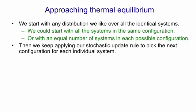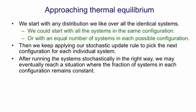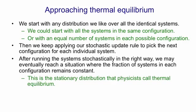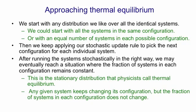We keep applying that stochastic rule, and after running the system stochastically in this way we may eventually reach a situation where the fraction of systems in each configuration remains constant. That will happen if we have symmetric connections — that's the stationary distribution that physicists call thermal equilibrium. Any given system keeps changing its configuration as we apply the update rule, but the fraction of systems in any particular configuration doesn't change, because we have many more systems than configurations.